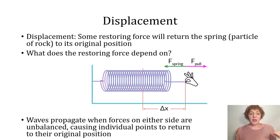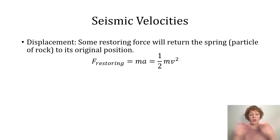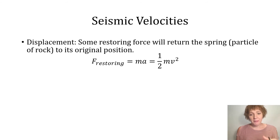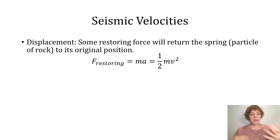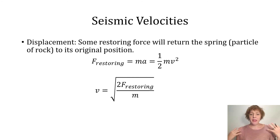Waves propagate when forces on either side are unbalanced, causing individual points to return to their original position. The rate at which they return depends on the physical properties of the spring — how springy or stiff it is. The equation to describe this: the restoring force equals mass times acceleration (F = ma), which also equals one-half of the mass times the velocity squared. We can rewrite this as velocity equals the square root of two times the restoring force divided by the mass.